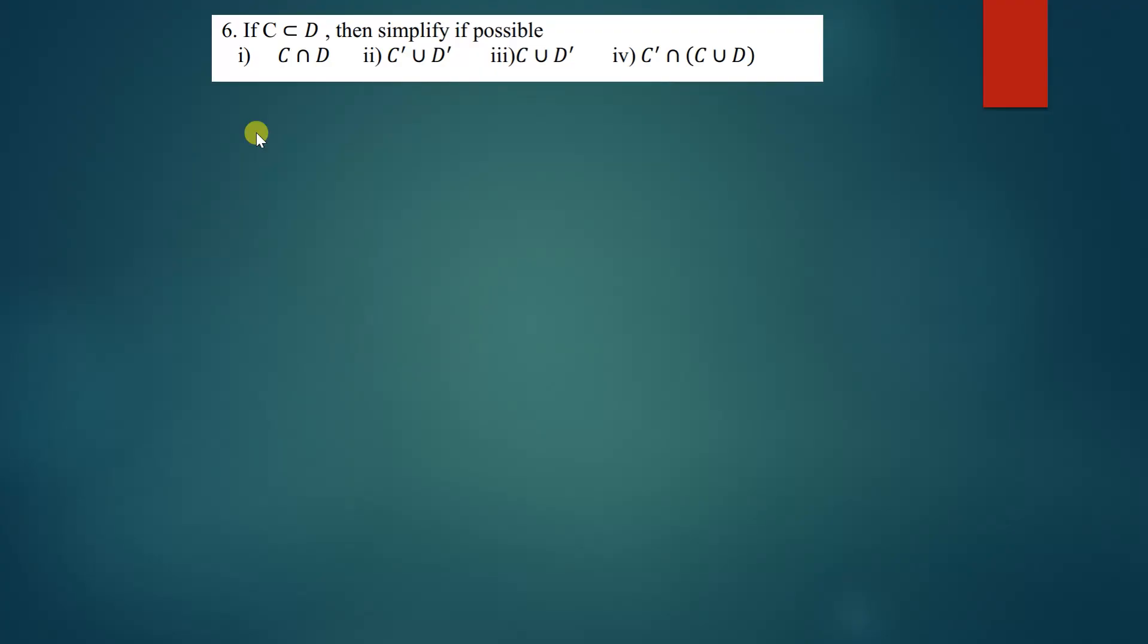The question says if c is a subset of d, so meaning you have something like this - this is set d and you have set c inside there, then you have this universal set. Simplify c intersection d.